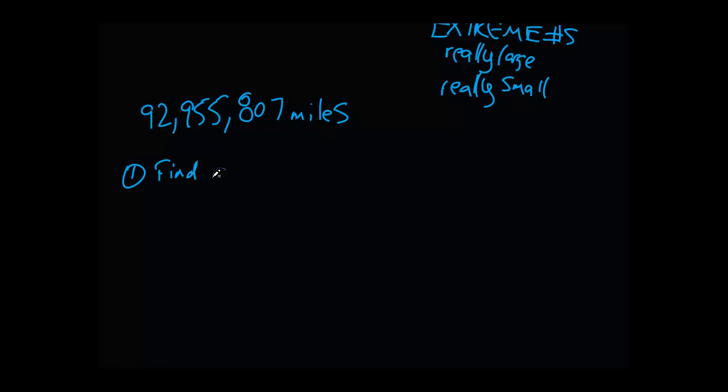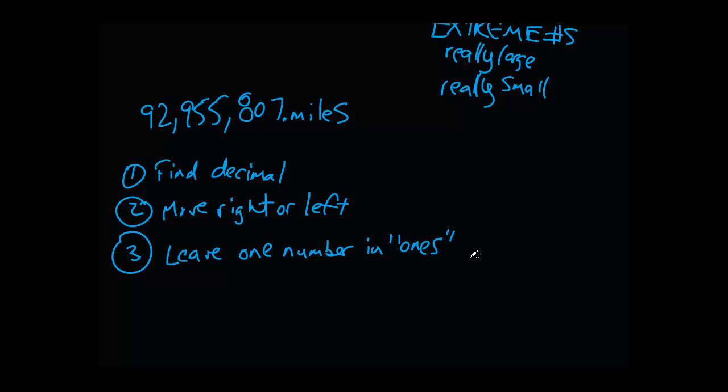First thing I'm going to do is find the decimal. And the decimal is of course at the end of the number right here. Second thing I'm going to do is move right or left until I'm able to leave one number in the ones place. What does that mean? Well, I'm going to move to the left because I'm going to leave the nine in the ones place.